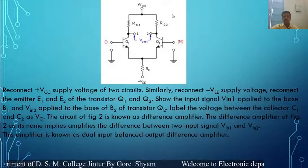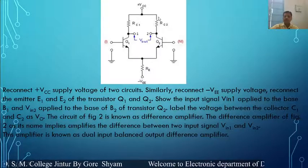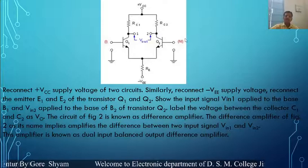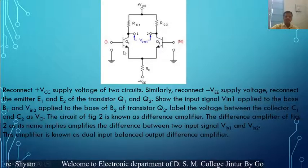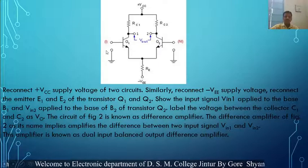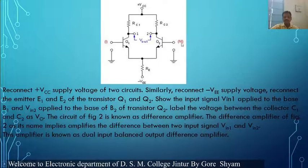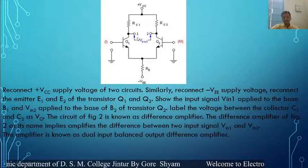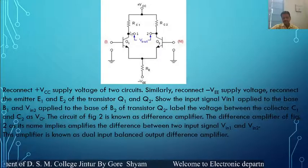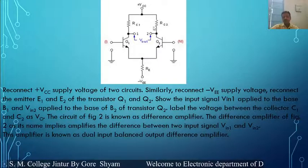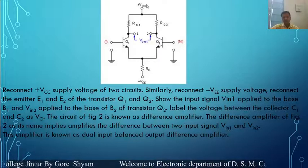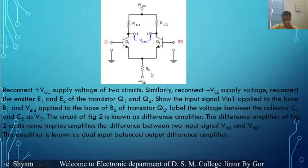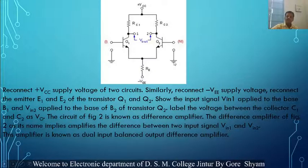When we reconnect the Vcc — the two supply voltages for the two amplifiers — they become common. Here, the two common emitter amplifiers are connected with each other. This is the first input and this is the second input. The output is taken across terminal 1 and terminal 2, from the collectors of the two transistors. The common Vcc and common Vee are used, and Re equals Re1 in parallel with Re2. In this way, this circuit is formed.